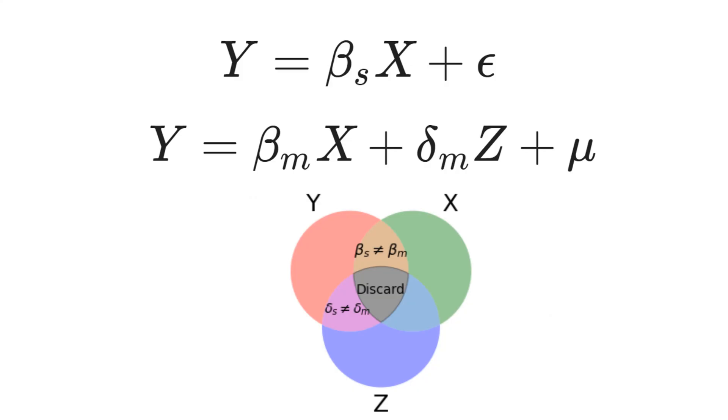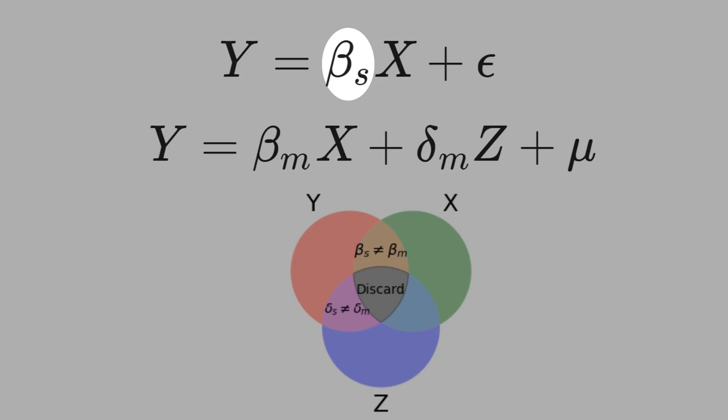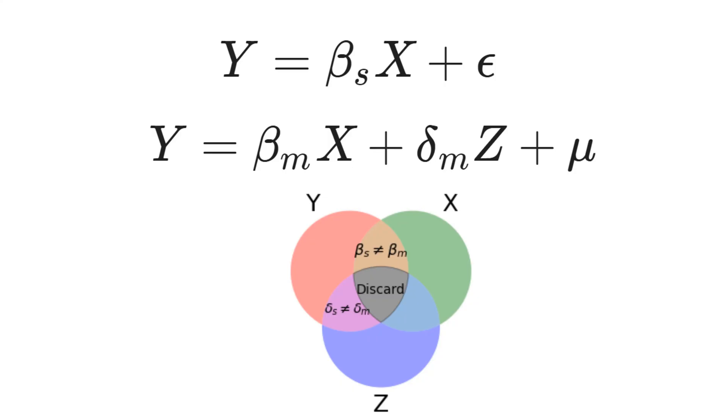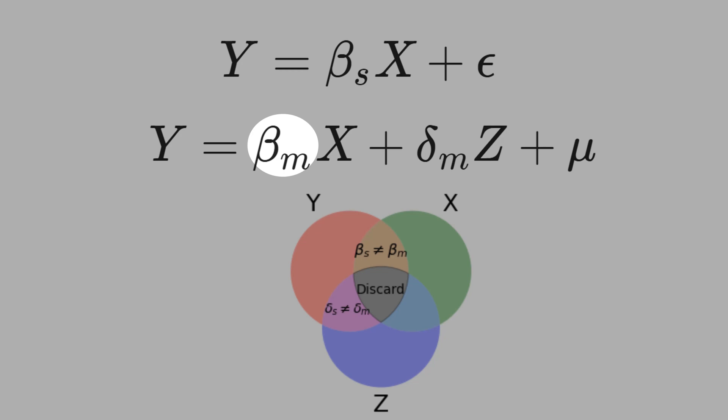What is more likely to be statistically significant: beta_s or beta_m? Beta_s, because in beta_m you discard some information, some variation that explains Y. I prefer to have an unbiased beta that is not statistically significant than a biased beta that is statistically significant.